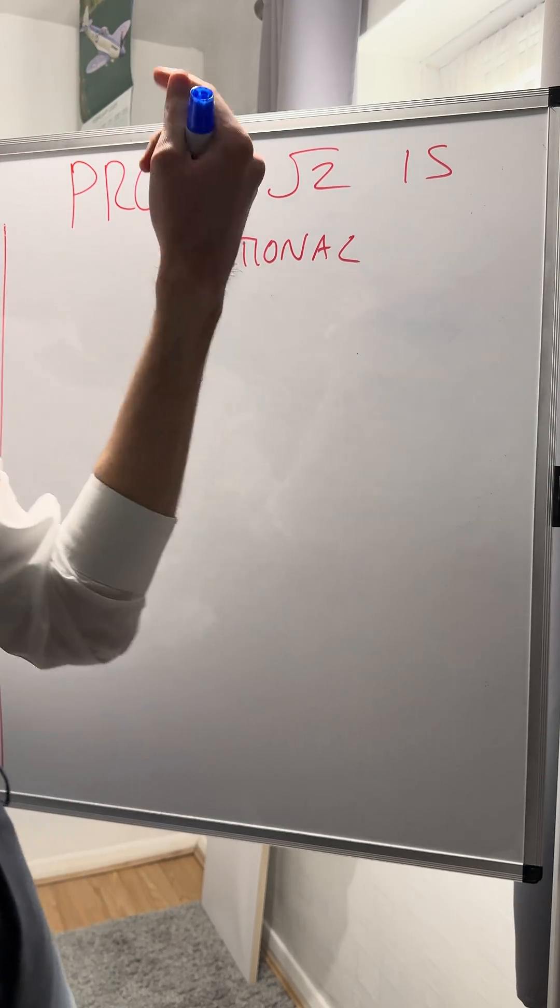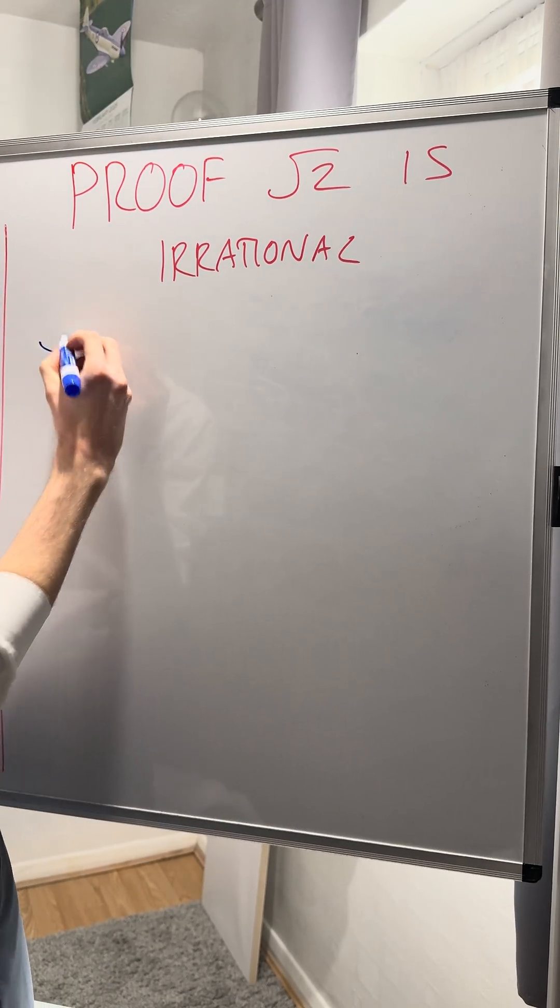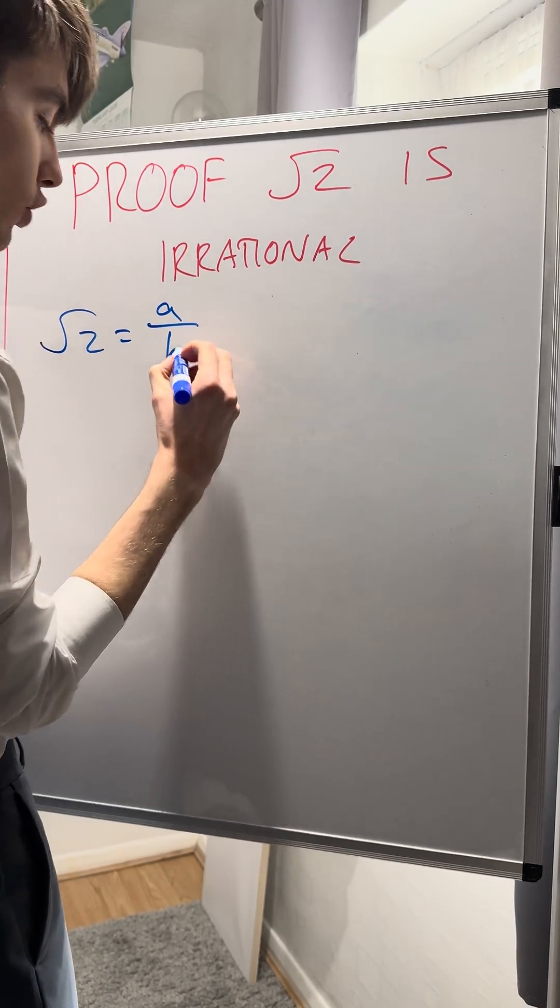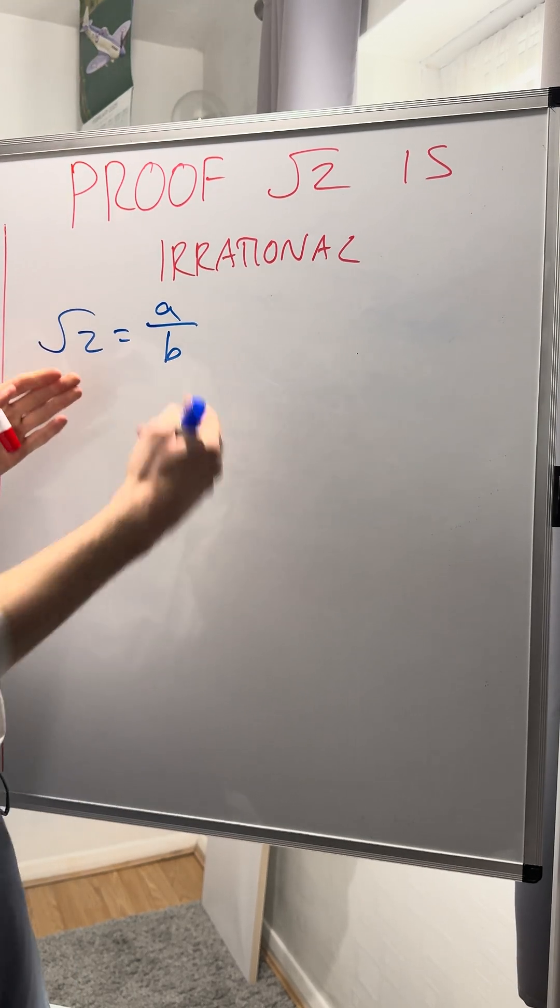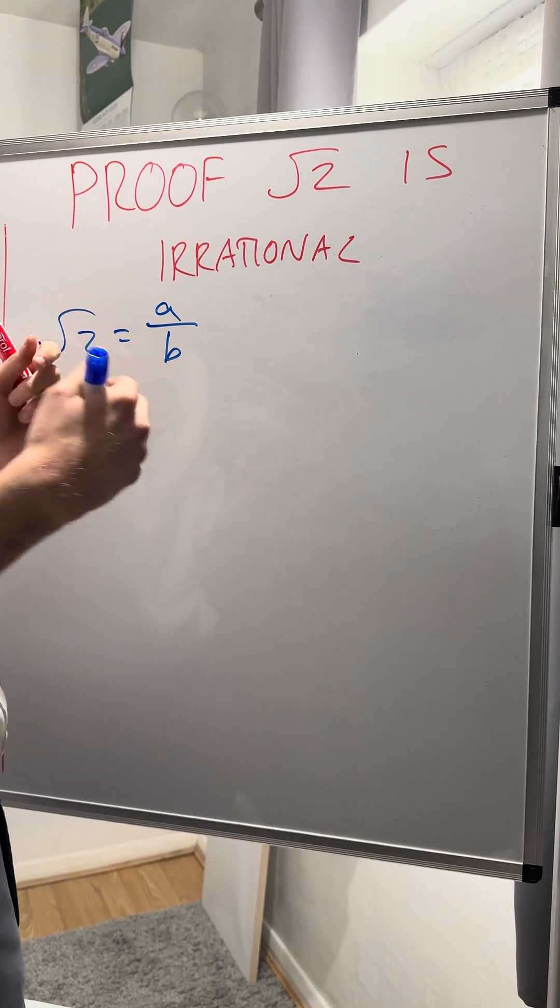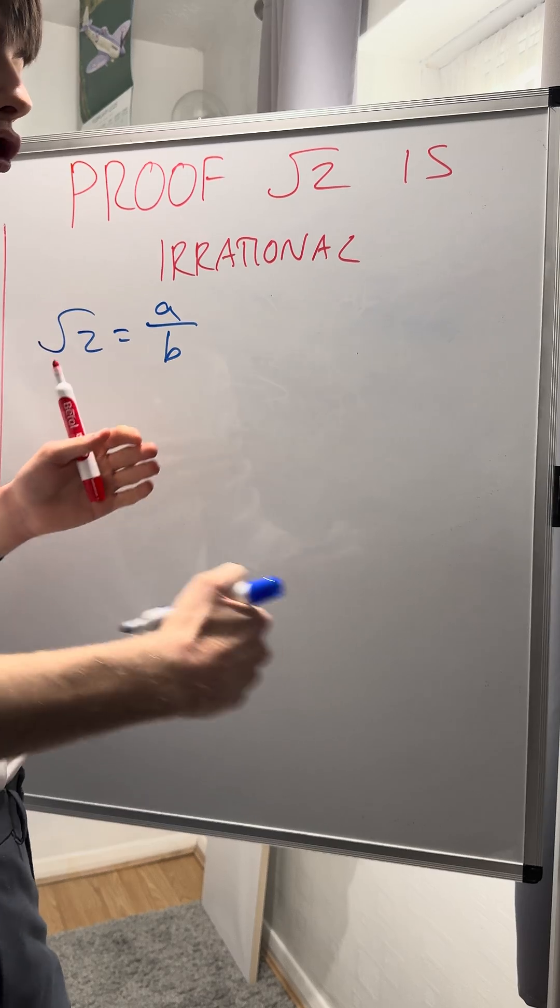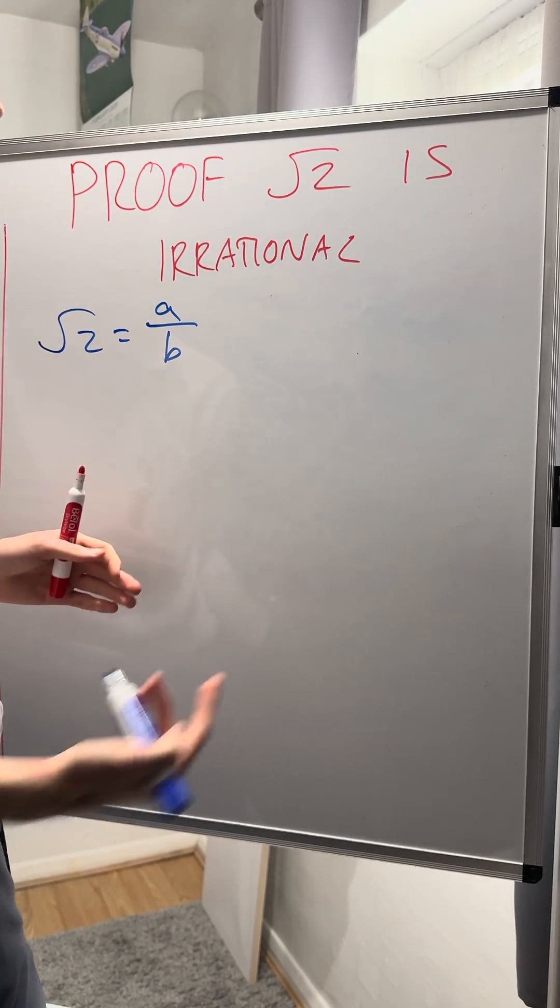I'm going to use proof by contradiction and initially say that root 2 must equal a fraction, a over b. Why is that? Because if you divide one number by another, you cannot end up with a set of numbers that don't repeat and go on forever—that is irrationality.